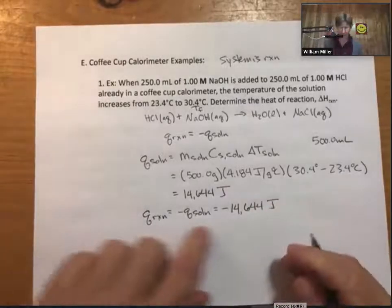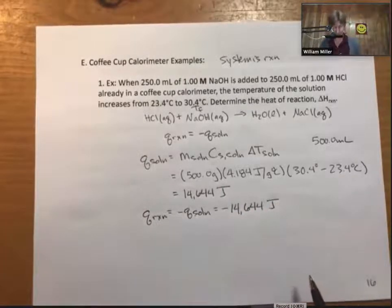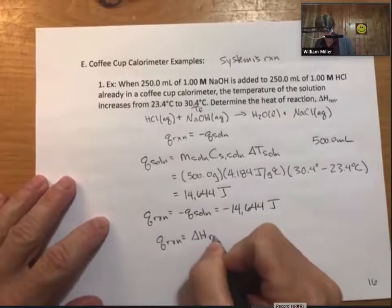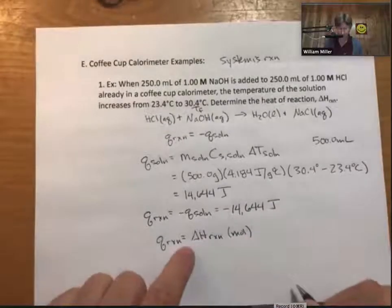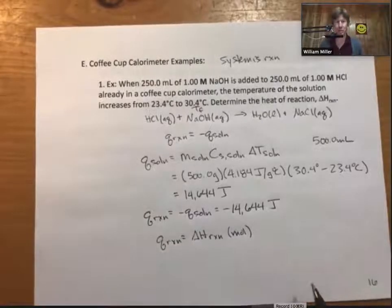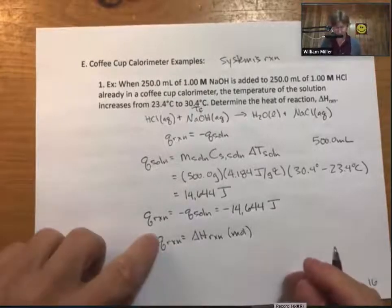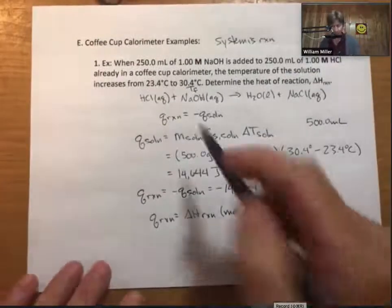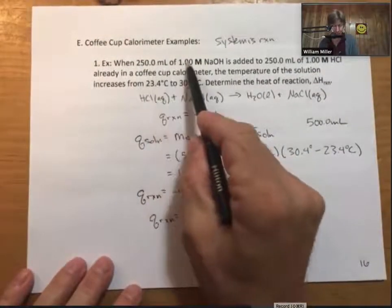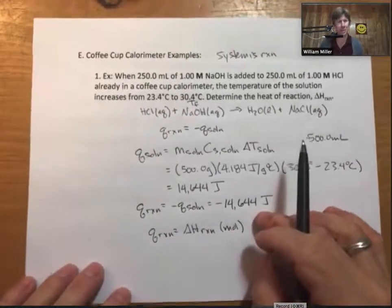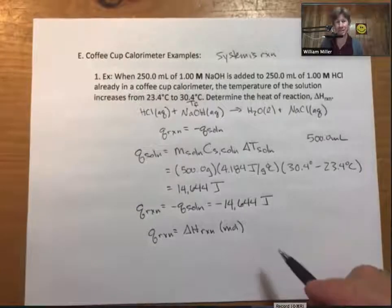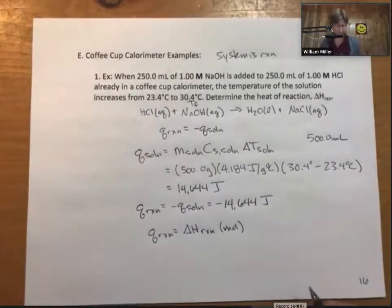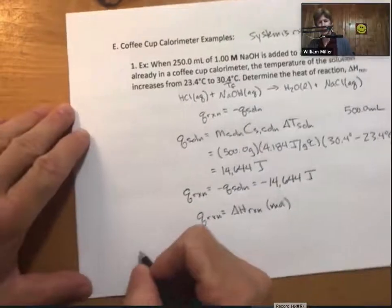Q's are heats and will always have units of joules. We can tell them apart from our delta H values because delta H values will always have units of joules per mole or kilojoules per mole. That is a positive amount of energy, meaning the solution is taking in energy and the reaction is giving off energy. So Q reaction is minus 14,644 joules. Q reaction equals delta H reaction times moles reacted. We still have to find our moles.